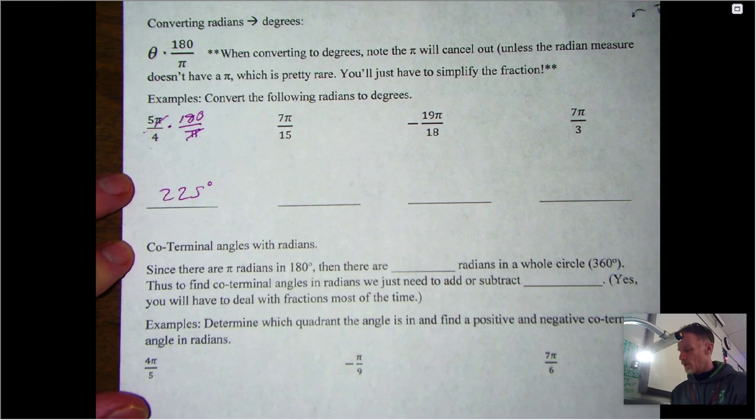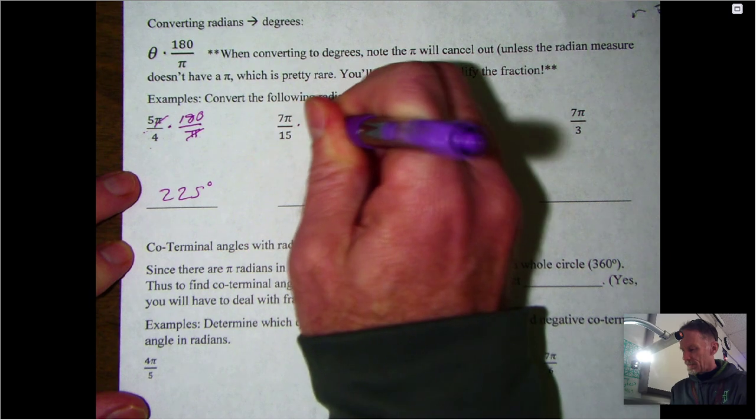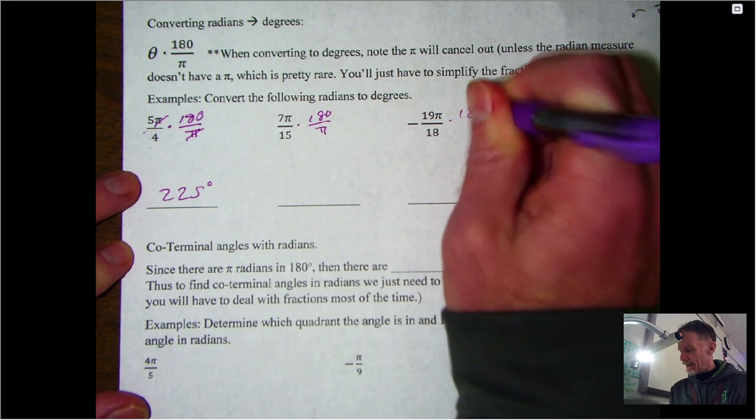We're always doing that same thing: 180 over π, 180 over π, and just simplifying the answer. Usually the π is going to cancel out. If you want to do those three, pause the video, and I'll go through the answers here in just one moment.